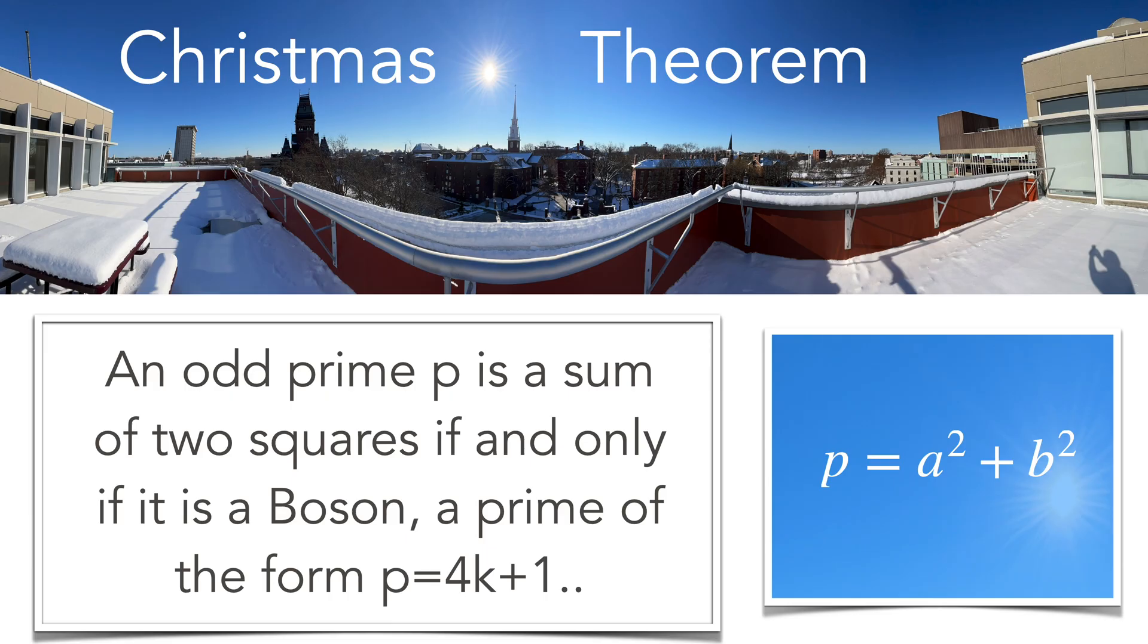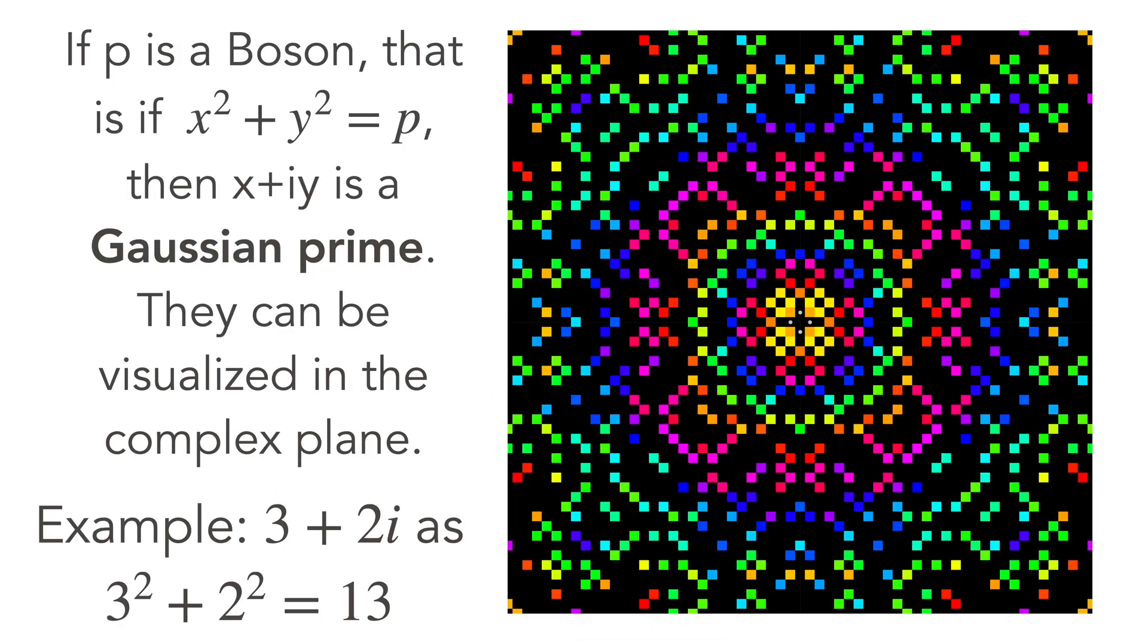The Christmas theorem deals with primes of the form 4k+1, with bosons. It tells that bosons decay into two particles a plus ib and a minus ib in the complex plane. If you take the product of the two you get indeed a square plus b square which is p. So here we see a picture of the Gaussian primes. These are the building blocks in the complex plane and you see the primes which are bosons like 13.